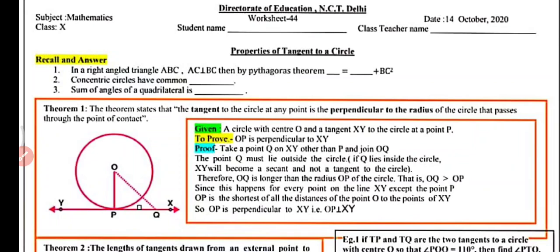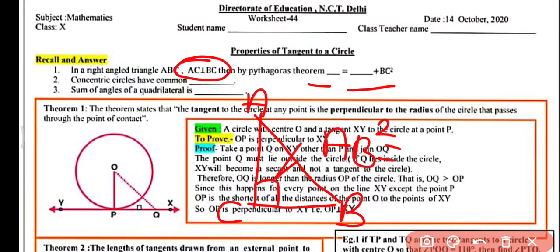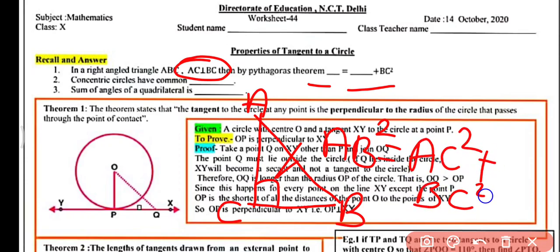Try to recall and answer first. In a right angle triangle ABC, if AC is perpendicular to BC, then by using the Pythagoras theorem: AB² equals AC² plus BC². Since AC is perpendicular to BC, they share a common vertex C, so the right angle is at point C, giving us AB² = AC² + BC².